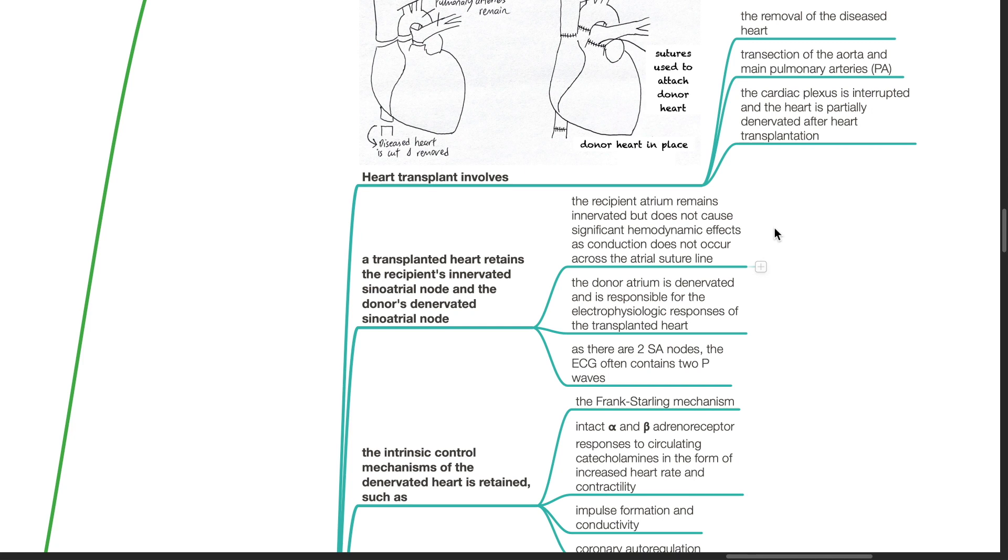The donor atrium is denervated and is responsible for the electrophysiologic responses of the transplanted heart. As there are two SA nodes, the ECG often contains two P waves.